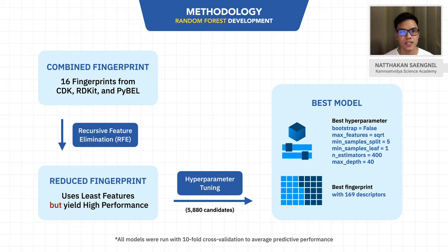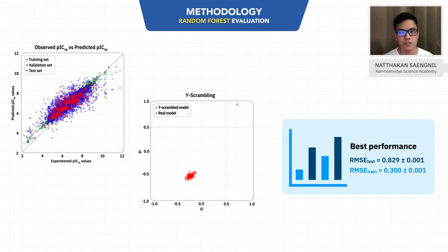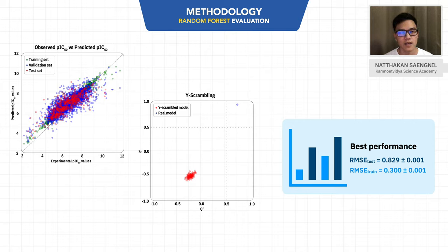RFE is the technique that can find a suitable number of features to obtain the best model without overfitting. Then, we plot the predicted versus experimental PIC50 value. It shows that our model can accurately predict the PIC50. And on the right-hand side is the Y-scrambling part, which is used to measure model robustness. This was done by training the model with random data and testing it with actual data. The results show that the fake model cannot predict the real data, so the original model is robust and did not learn by chance.